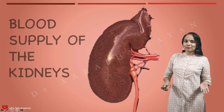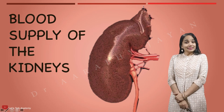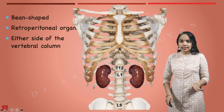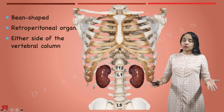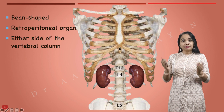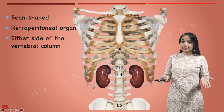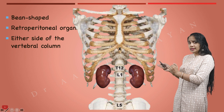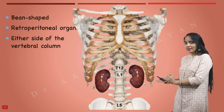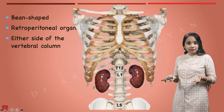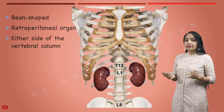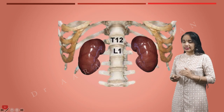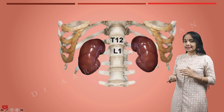Hello everybody, let's talk about the blood supply of the kidneys. We've already seen the gross anatomy of the kidney — we know that they are retroperitoneal organs, bean-shaped organs located on either side of the vertebral column. The right kidney is slightly lower than the left because we have the liver on the right side, and the superior poles are slightly tilted towards the center; the kidneys are not vertical, they are slanted.